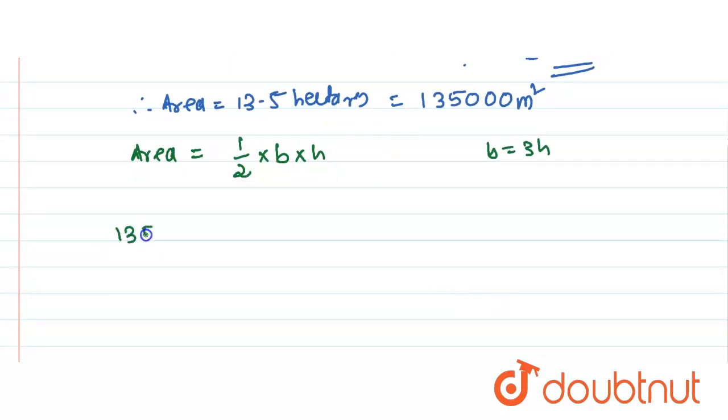1 by 2 into 3H into H. So just shift this 2 to this side, so 135000 into 2 is equal to 3H square. H into H is H square. So this is H square equals